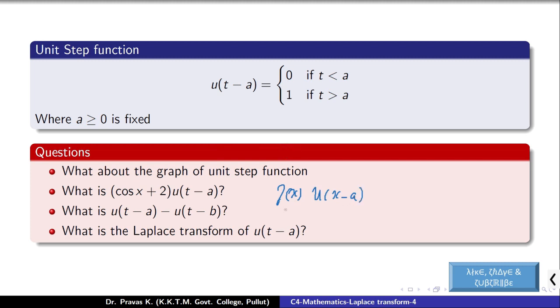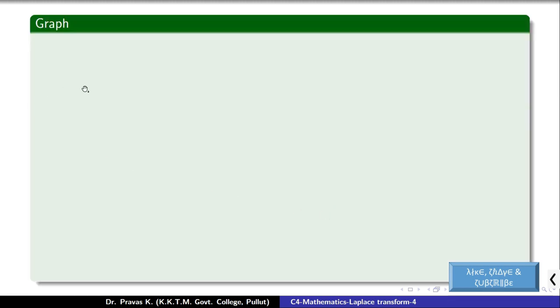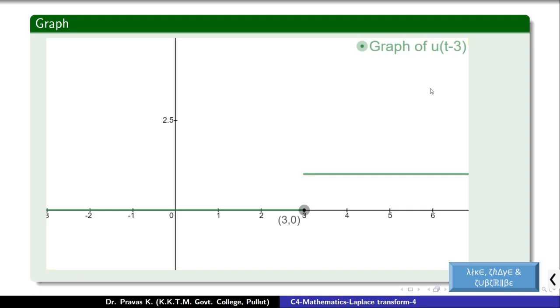Now we look at the difference of two unit step functions. The first one is the Laplace transform of the unit step function. We have a graph, and the graph is u of t minus 3.